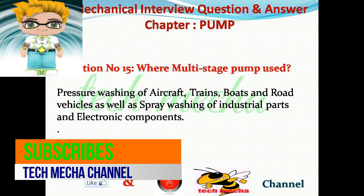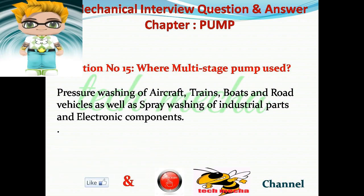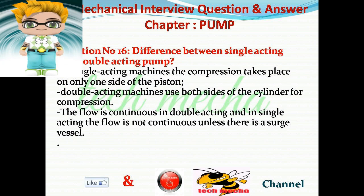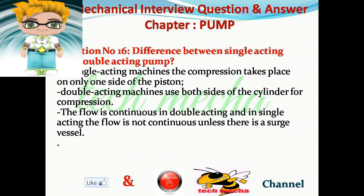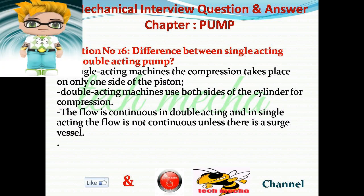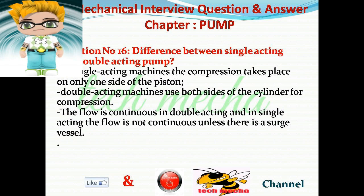Question number 15: Where are multi-stage pumps used? Answer: Pressure washing of aircraft, trains, boats, and road vehicles, as well as spray washing of industrial parts and electronic components. Question number 16: What is the difference between single-acting and double-acting pumps? Answer: In single-acting machines, compression takes place on only one side of the piston. Double-acting machines use both sides of the cylinder for compression. The flow is continuous in double-acting pumps; in single-acting pumps the flow is not continuous unless there is a surge vessel.